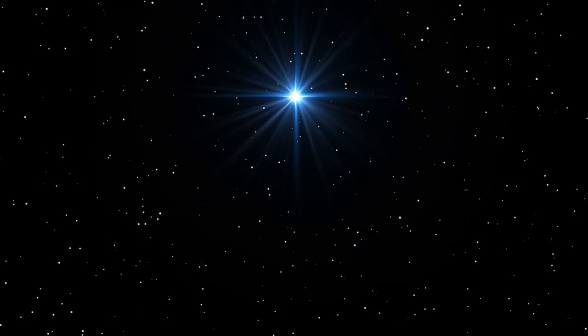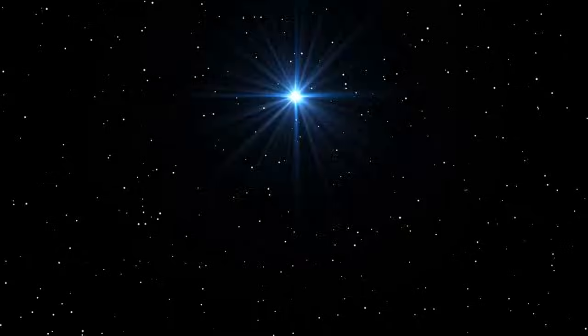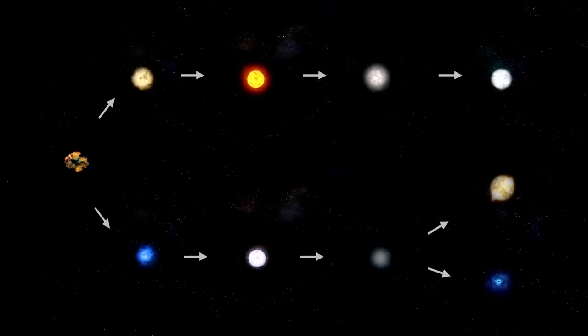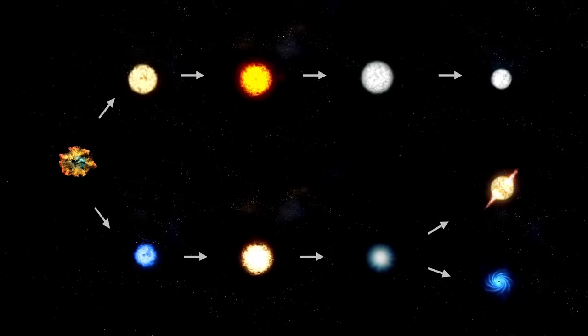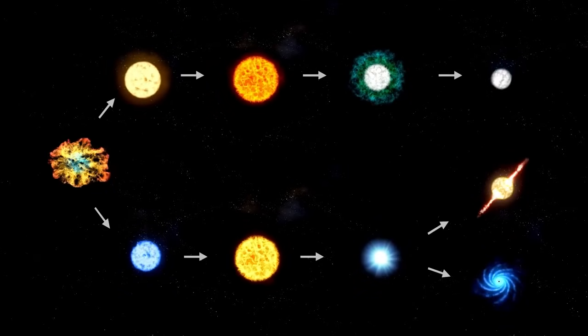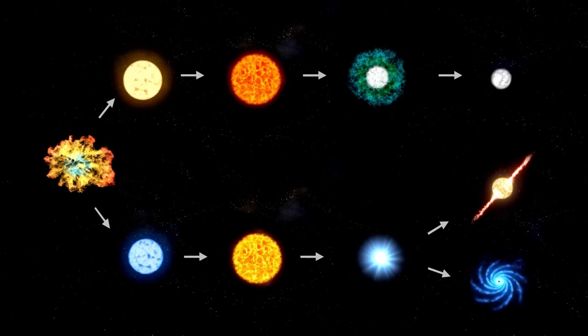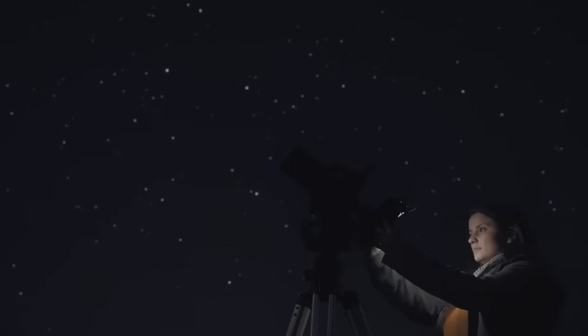However, the scarcity of light from Betelgeuse is not only due to the distance that separates us from it. Betelgeuse is what is known as a pulsating red supergiant, which means that it is an ancient, massive star that undergoes expansions and contractions during these cycles.